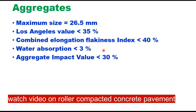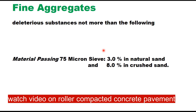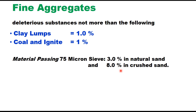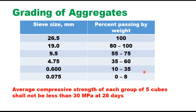For aggregate in RCC, the maximum size is 26.5 mm; Los Angeles abrasion value less than 35%; combined elongation and flakiness index less than 40%; water absorption less than 3%; and aggregate impact value less than 30%. For fine aggregate, deleterious material should not be more than 1% for clay lumps and 1% for coal and lignite; material passing the 75-micron sieve is permitted up to 3% for natural sand and up to 8% for crushed sand. These parameters should be approved by the engineer in charge before starting construction. The combined grading of coarse and fine aggregate should satisfy the requirement given in the specification table.